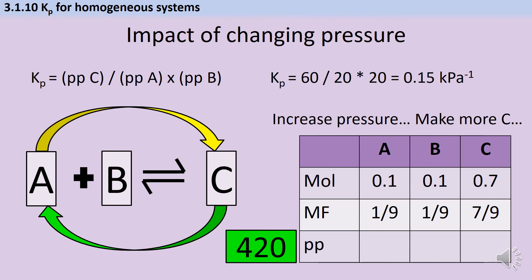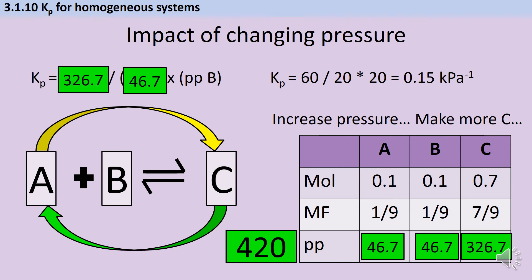Here's where it gets interesting. Let's say that our new pressure is 420 kilopascals. If I multiply each one of these to get the partial pressures, and I substitute in each one of those values, I get a final value for Kp that is still 0.15 kilopascals to the minus one. The combination of the shifting mole fractions and the change in pressure means that all the maths works out so that Kp stays exactly the same.